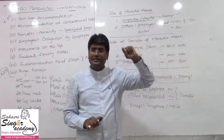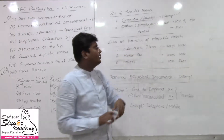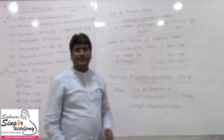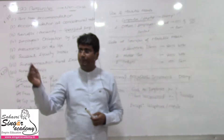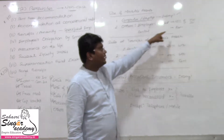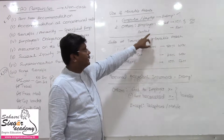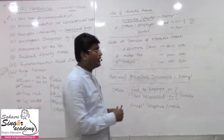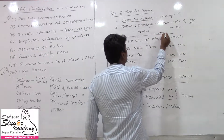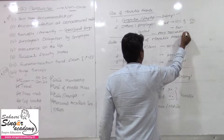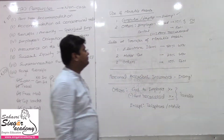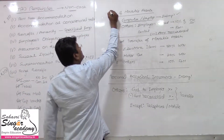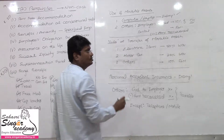If the employer owns the asset, the original cost at 10% will be considered as the perquisites value. If the employer takes it on rental, the rental amount will be considered as the perquisites value.